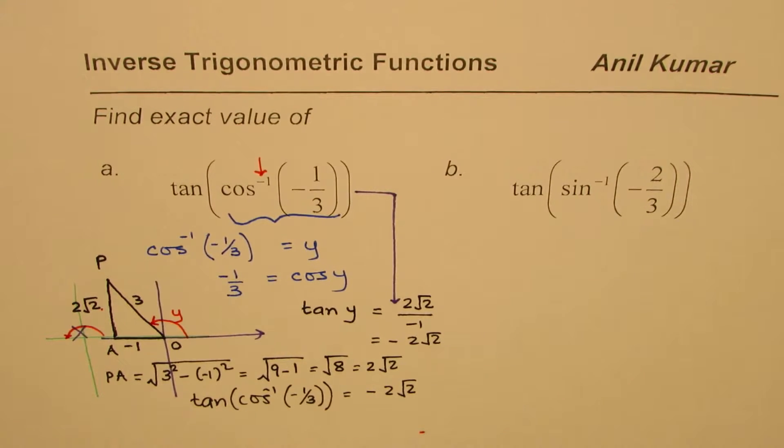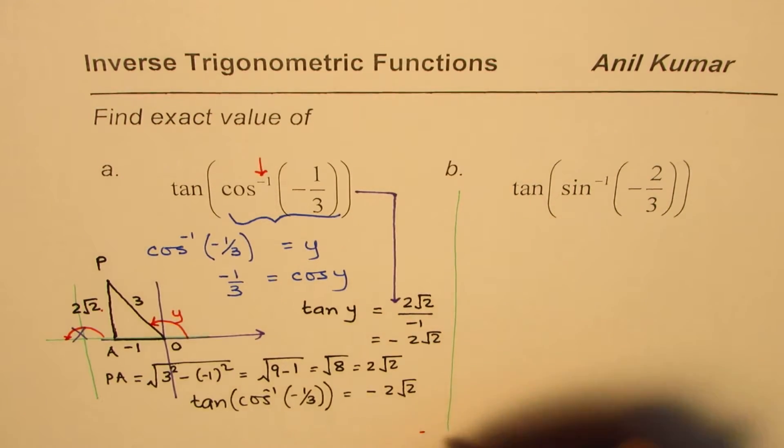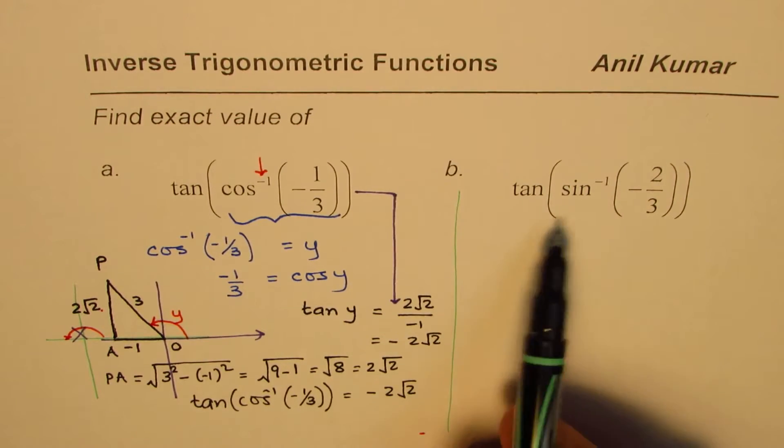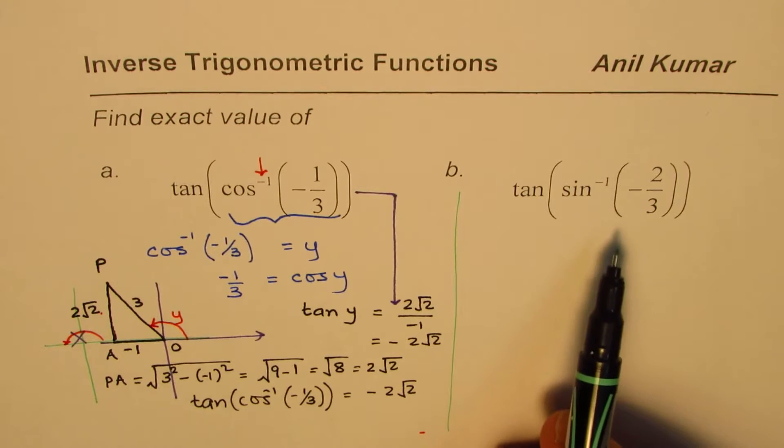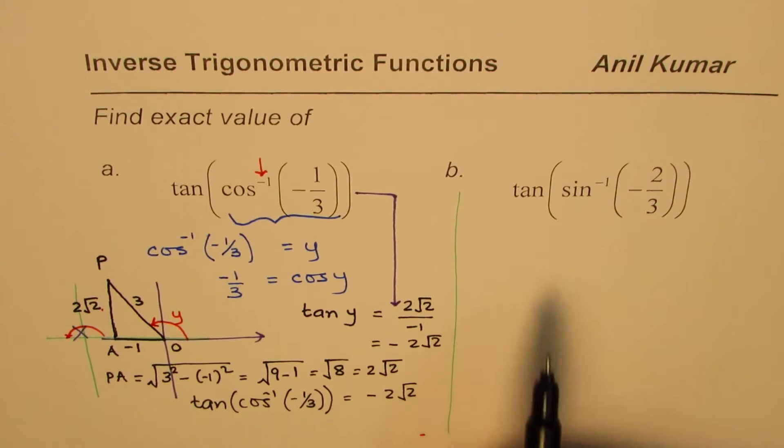So our answer is that tan(cos^(-1)(-1/3)) is equals to -2√2. So I hope you understood the concept. That is how you should be doing it. Let's take sine also, and then the whole concept will be clear.